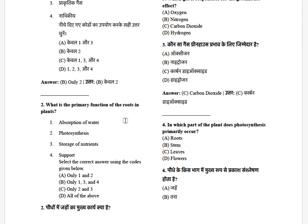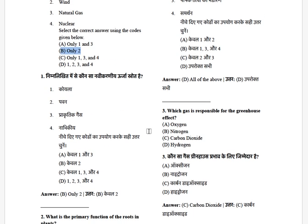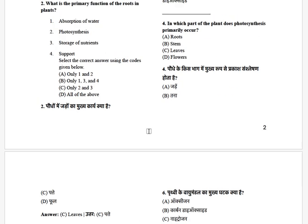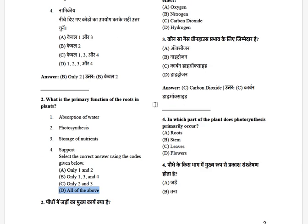What is the primary function of roots in plants? The options are: absorption of water, photosynthesis, storage of nutrients, and support. The answer is all of the above.